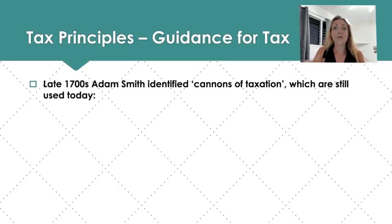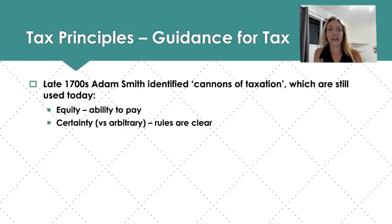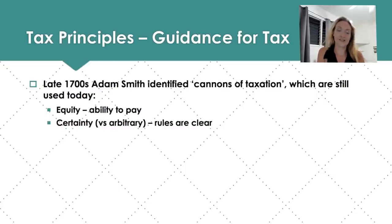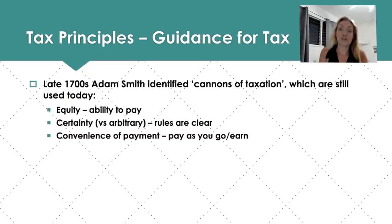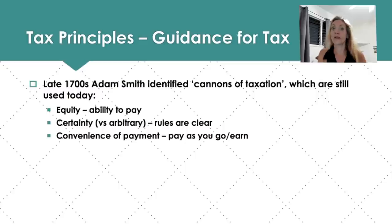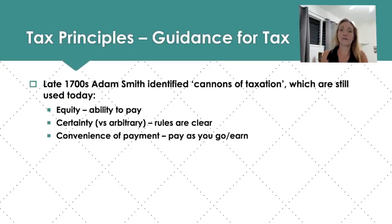Tax principles — what our tax system was based on: ability to pay, equity — we want the tax system to be based on the ability to pay; certainty — we want rules to be clear versus arbitrary; and convenience of payment — that's why we have a pay-as-you-go or earn system, which is why taxes are withheld. When you work a job for a company, they withhold and send those taxes to the government for you. It is way more painful to take taxes out yourself than when they're withheld by a company.